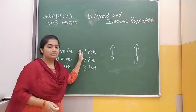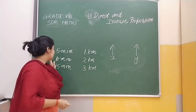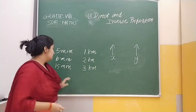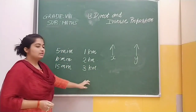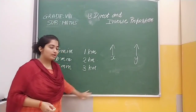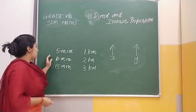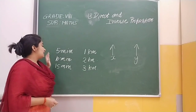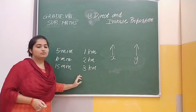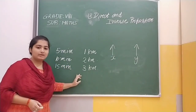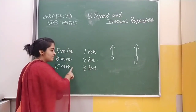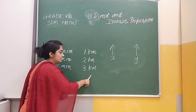In 5 minutes, 1 km. 10 minutes, it goes 2 km. 15 minutes, 3 km our car is running. Here you can see, when our time is increased, then our distance is increased. It means that both are increased — when one is increased, then the other will also increase.